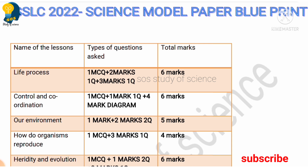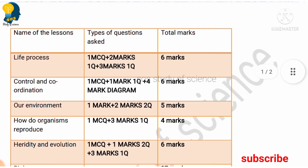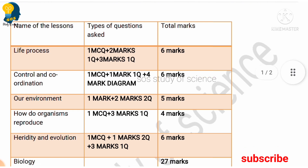Moving to the next lesson, How Do Organisms Reproduce — they have allotted a bit fewer marks here. Our Environment increased in marks, and for How Do Organisms Reproduce we expected around five to six marks, but in the model question paper they have allotted four marks, out of which there is one MCQ question and one three-mark question.